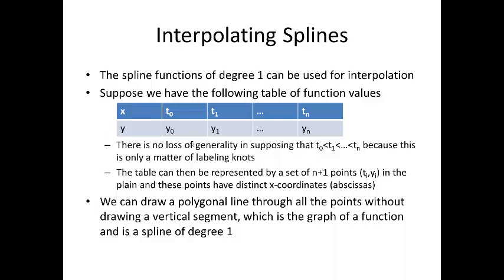So, the spline function of degree 1 can be used for interpolation. That is, to fit through the points on a hypothetical graph. Suppose we have the following table of function values. Now, you've seen these back in chapter 4. There's no loss of generality in supposing that t0 is less than t1 is less than tn. Basically, we can put the t sub i points in order, and then it's only a matter of labeling the knots. The table can then be represented by a set of n plus 1 points, (ti, yi), in the plane, and these points have distinct x, y coordinates. We can draw a polygonal line through all the points without drawing a vertical segment, because again, those are not equal. Which ends up being the graph of a function, and it's also a spline of degree 1.